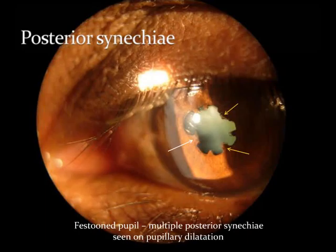This is a photo of posterior synechiae. Multiple posterior synechiae are seen in the pupil. You can see that those are the areas of the pupil adhering to the lens and they are not dilating. The rest of the pupil has dilated.